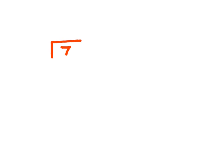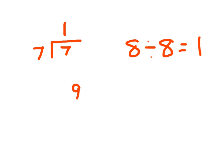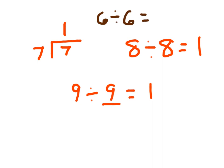One final property: when you divide a number by itself, the quotient is 1. When you divide a number — say, 7 — by itself, 7 divided by 7 is equal to 1. 8 divided by 8 is equal to 1. 9 divided by 9 equals 1. And 6 divided by 6 equals 1.